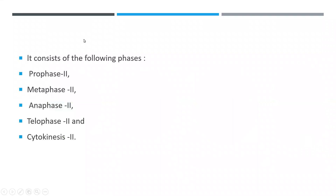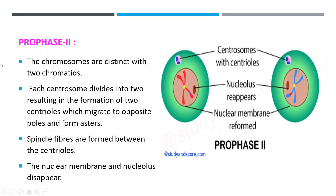Meiosis 2 is very much similar to the mitosis process. It consists of prophase 2, metaphase 2, anaphase 2, telophase 2, and cytokinesis. The nuclear stages — prophase, metaphase, anaphase, and telophase — take place in the nucleus and are called karyokinesis, whereas cytokinesis is the division of the cytoplasm.